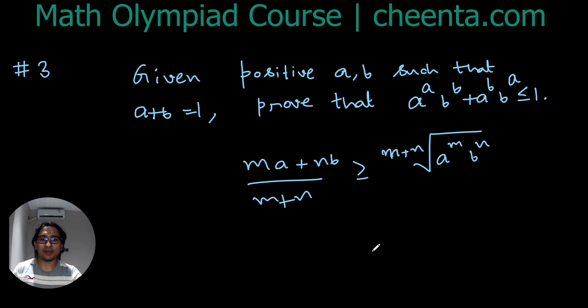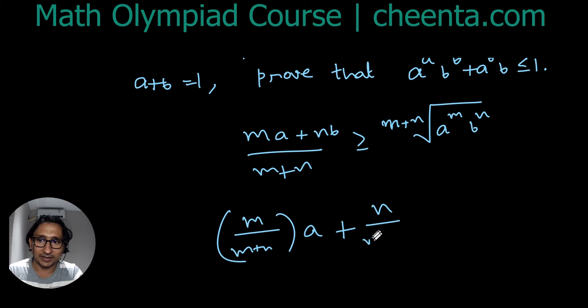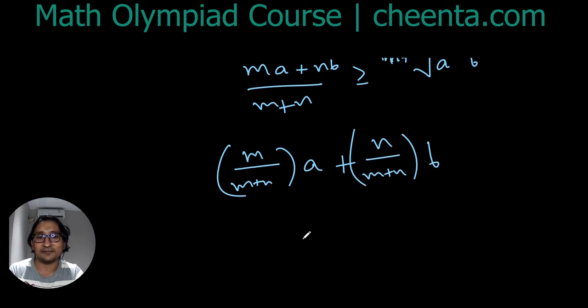So the weighted AM-GM is used when there is some repetition, each positive real number is repeated more than once. And this can be actually generalized. This can be written, for example, as m/(m+n) times a plus n/(m+n) times b on the left hand side.